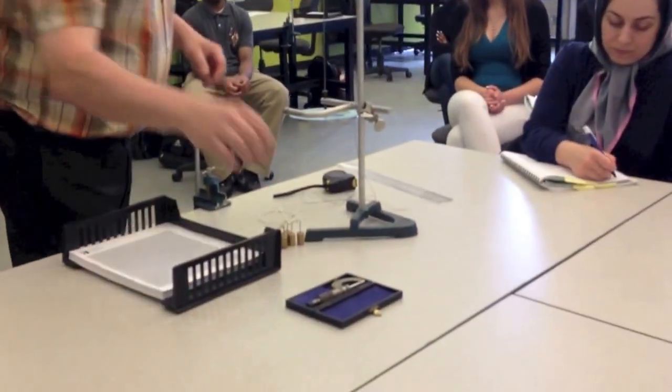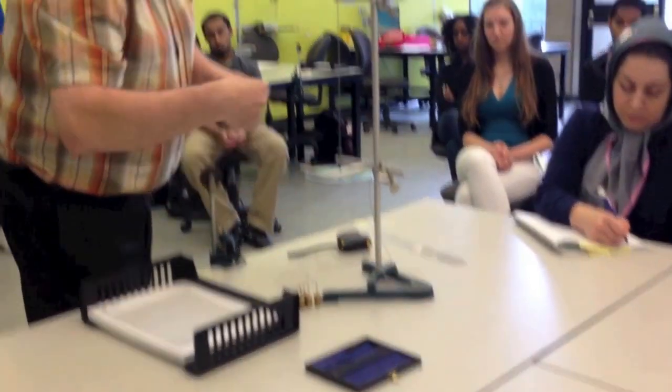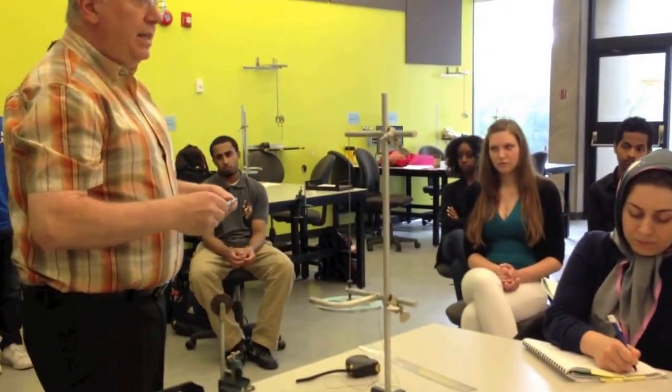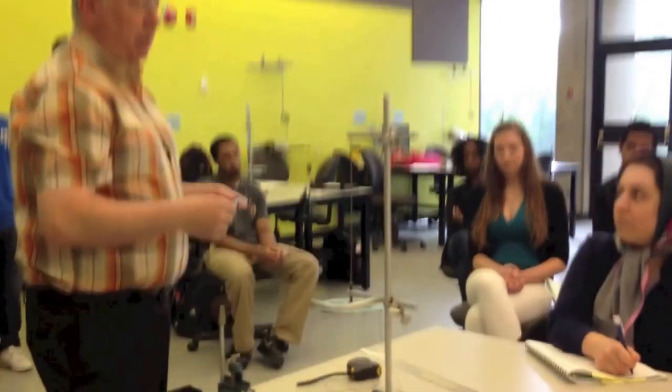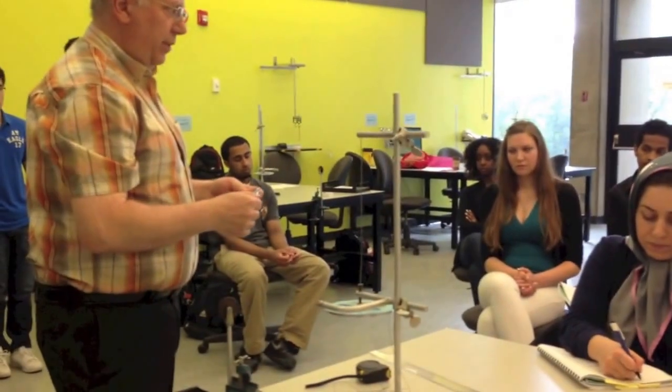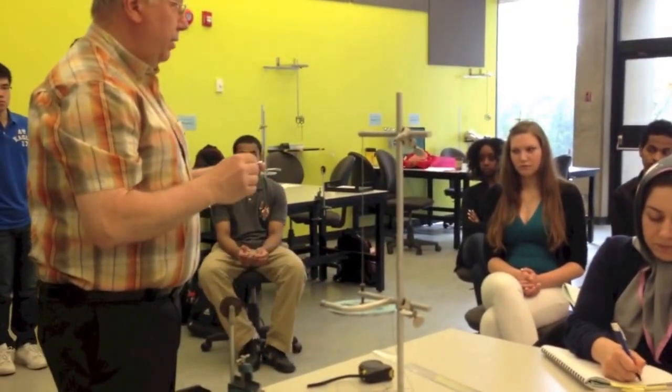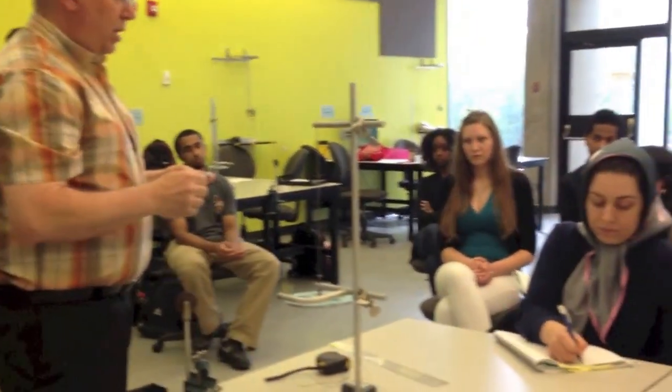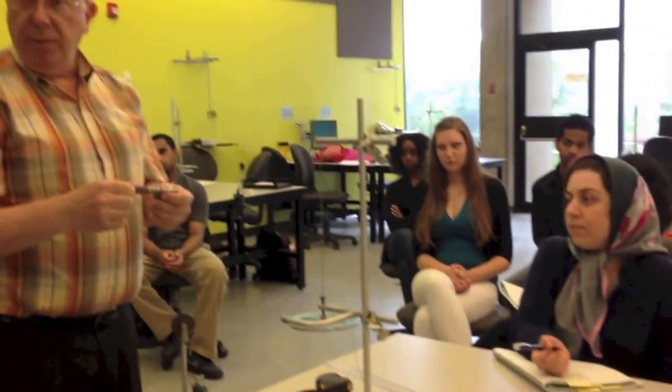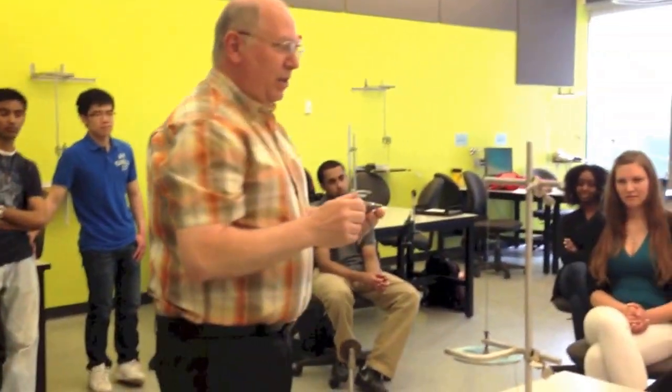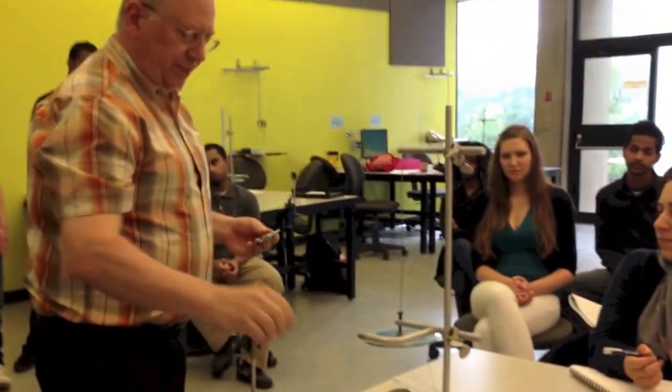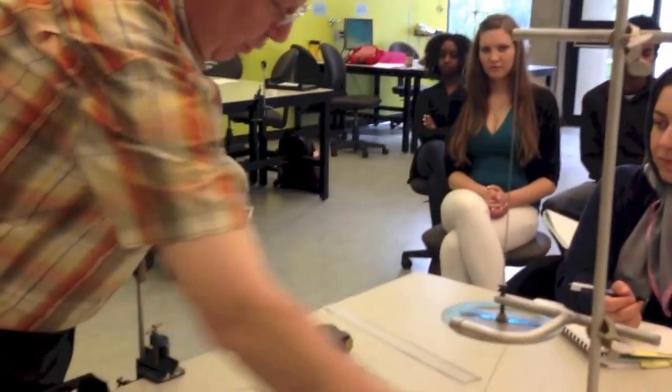A micrometer, like this device over here, allows us to measure at least one hundred times smaller than you can with the ruler, to one one-hundredth of a millimeter. Now, does everyone know how a micrometer works? I'll explain how this micrometer works.